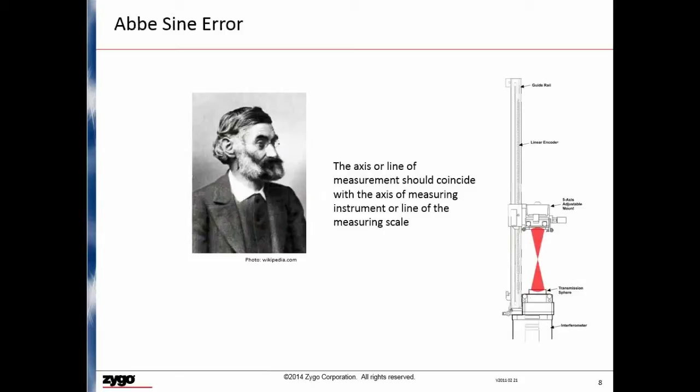The first error is Abbe's sign error. Abbe was a famous German optical scientist who along with Carl Zeiss was a co-owner of Carl Zeiss AG. Abbe stated that the axis of line of measurement should coincide with the axis of measuring instrument or line of measuring scale. Let's look at the radius scale shown previously and see how the Abbe's sign error can affect measurement uncertainty.